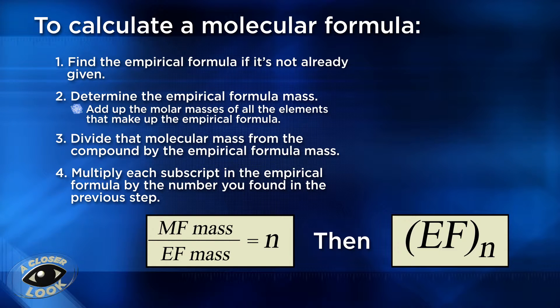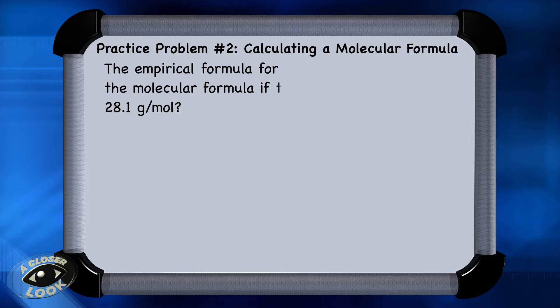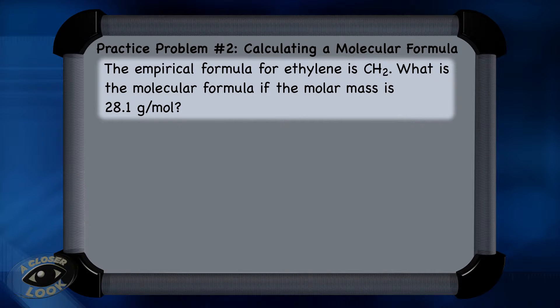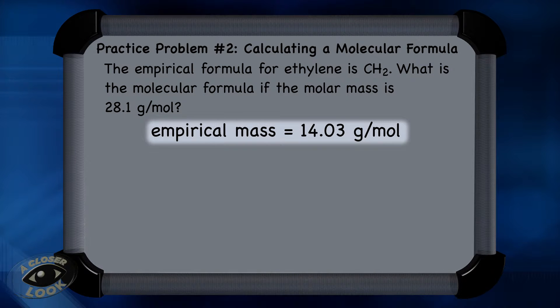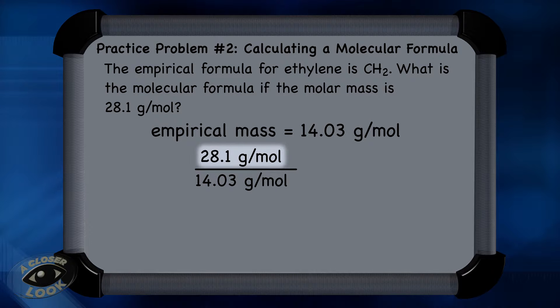Here's a problem in which we have to calculate the molecular formula. This problem tells us that the empirical formula for ethylene is CH2. We need to find the molecular formula if the molar mass of the compound is 28.1 grams per mole. The empirical formula mass is found from taking 12 from carbon plus the 2 from hydrogen, and we get 14.03 grams per mole as the empirical formula mass. The molecular mass, which was given in the problem, is 28.1.